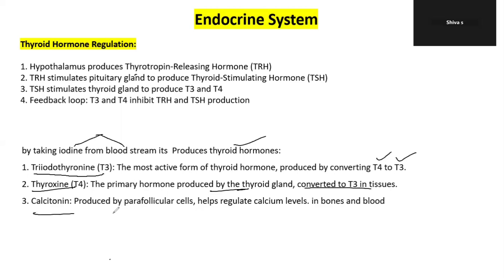Calcitonin is produced by the parafollicular cells (C cells). It regulates calcium levels in the blood and maintains calcium homeostasis.